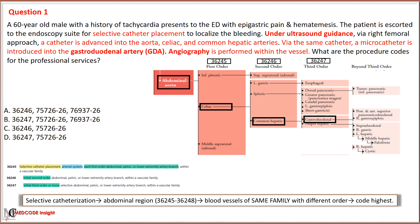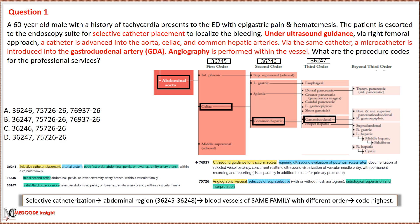Based on the guidelines, we eliminate options A and C with code 36246, which is used for second order catheterization. Both options B and D include code 75726 for vessel angiography, which is performed in this scenario and should be reported separately. In option B, code 76937 is used when catheterization is performed under ultrasound guidance, which is also the case here and should be coded separately. The modifier 26 indicates that professional services are provided. Therefore, the correct option is Option B: code 36247, 75726 with modifier 26, and 76937 with modifier 26.